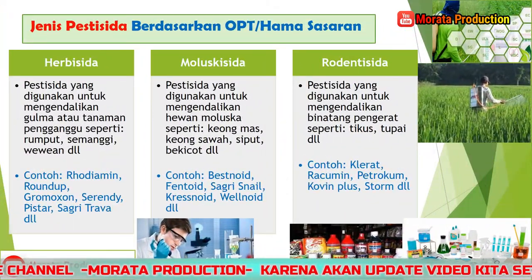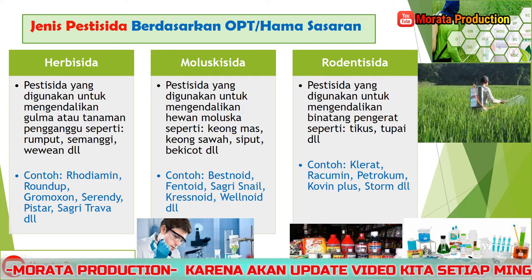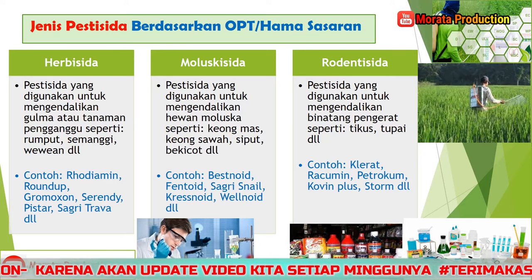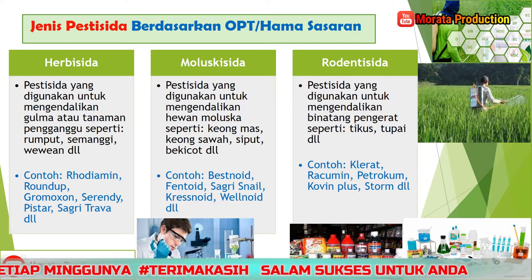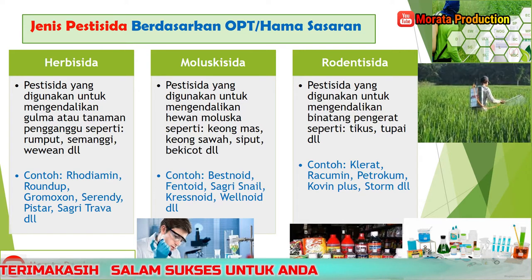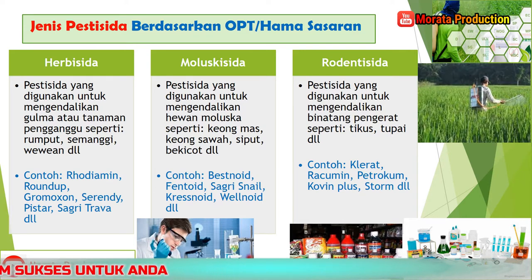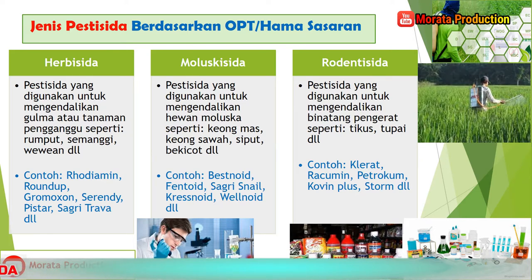Jenis pestisida berdasarkan organisme pengganggu tanaman atau hama sasaran. Yang pertama, herbisida, yaitu pestisida yang digunakan untuk mengendalikan gulma atau tanaman pengganggu seperti rumput, semanggi, wewehan, dan lain-lain. Contoh produk herbisida adalah Rhodiamine, Rondap, Gramoxon, Serendi, Pistar, Sagritrafa, dan lain-lain.